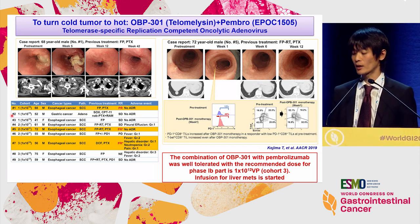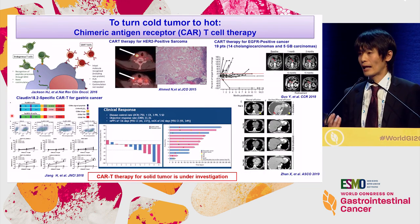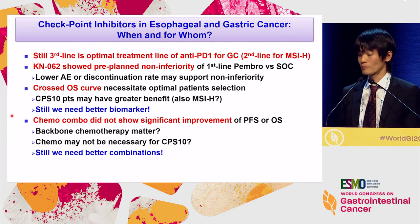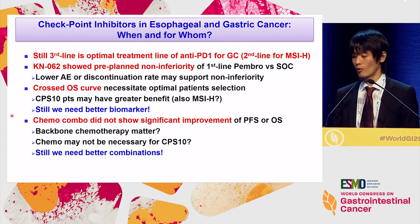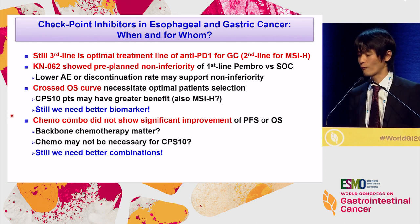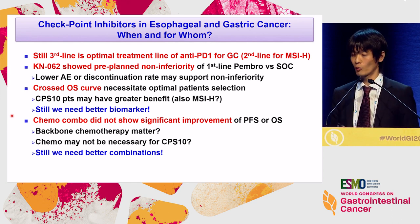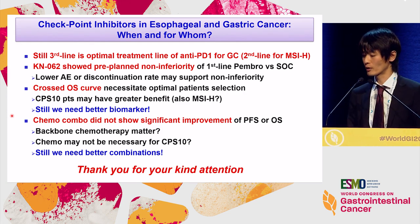CAR-T therapy will be coming for solid tumors soon. At last ASCO, Claudin 18.2-specific CAR-T therapy for gastric and pancreatic cancer showed very promising activity, with a response rate of 33%. In summary: third-line anti-PD-1 therapy remains an option for gastric cancer. Keynote 62 showed a crossing survival curve but still opens the door for checkpoint inhibitors in earlier lines of treatment. The crossing survival curve and the negative chemo combination results suggest that we need better biomarkers and better combinations.